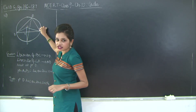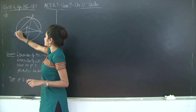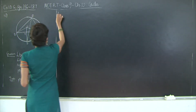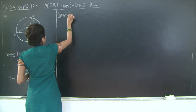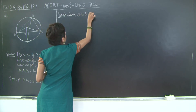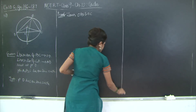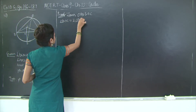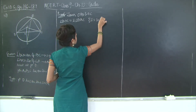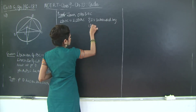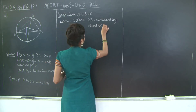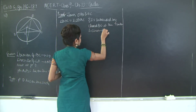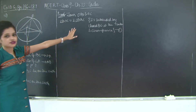Chord BC subtends angle BOC at the center and angle BAC at the circumference. This is the minor arc. Therefore, angle BOC is twice angle BAC. Let's write this down. Join OB and OC. Therefore, angle BOC is equal to twice angle BAC — angle subtended by chord BC at the center and circumference. Mark this as statement 1.